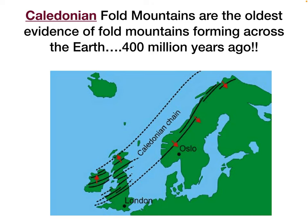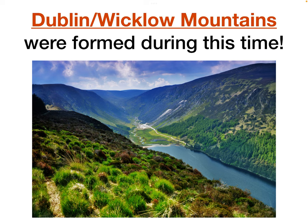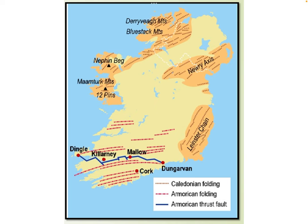The oldest fold mountains across the Earth are the Caledonian fold mountains — they started forming first, 400 million years ago. They went across Ireland, Scotland, and Scandinavian countries. The Dublin-Wicklow Mountains are one of the oldest fold mountains we have across this Earth, starting to form 400 million years ago. A map of Ireland shows that the Armorican folding happened 250 million years ago and affected the south of Ireland — the Munster region — whereas the Caledonian folding happened 400 million years ago and affected Leinster, forming the Dublin-Wicklow Mountains, as well as the Bluestack Mountains in other regions of Ireland.